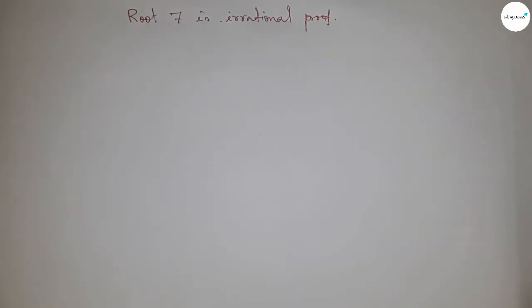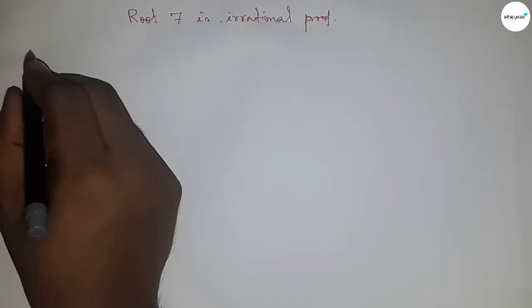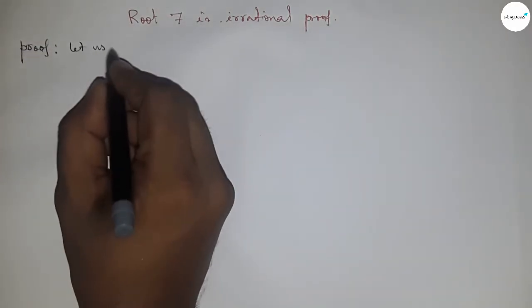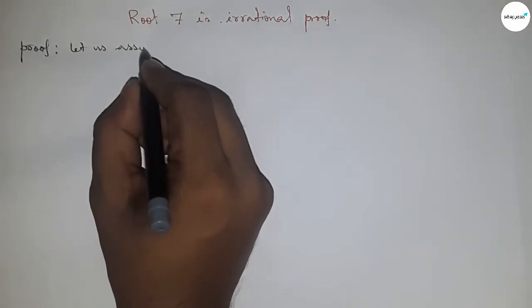Hi everyone, welcome to assessor classes. Today we have to prove that root 7 is an irrational number. I'm going to use the contradiction method to prove root 7 is an irrational number.